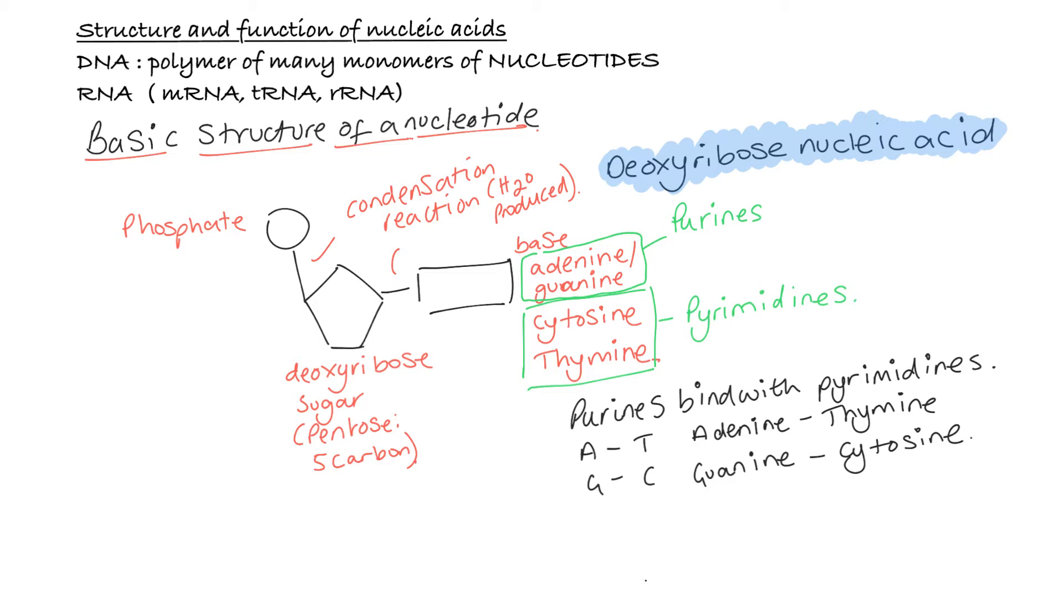Now, when adenine and thymine bind together, a double bond is formed. And when cytosine and guanine bind together, a triple hydrogen bond is formed. So we have this slight difference in the bonding between the two molecules.